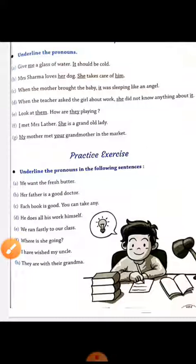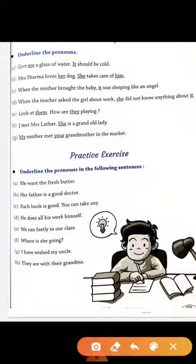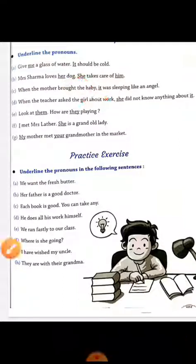Next: Mrs. Sharma loves her dog. She takes care of him. Here, her and she are pronouns for Mrs. Sharma, and him is the pronoun for the word dog. Next: When the mother brought the baby, it was sleeping. So it is the pronoun for the word baby.